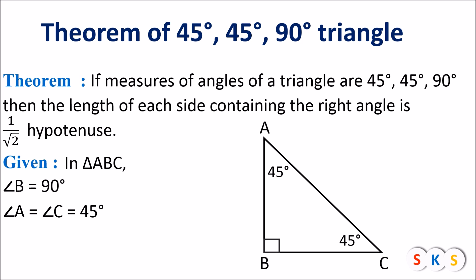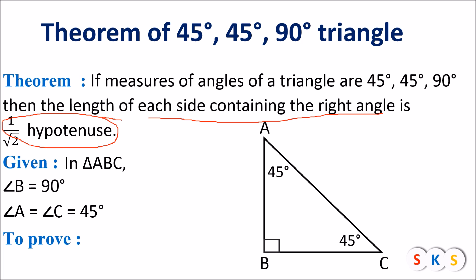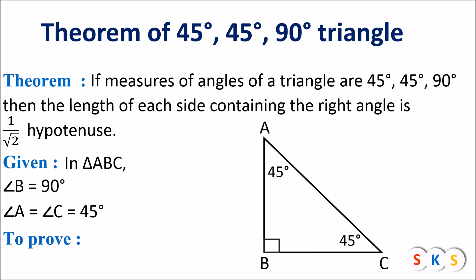What is given: in triangle ABC, angle B is 90 degrees, and angle A and angle C are equal to 45 degrees. To prove: the side containing the right angle is 1 upon root 2 times the hypotenuse. Angle ABC is a right angle, and AB and BC are the sides which contain the right angle.